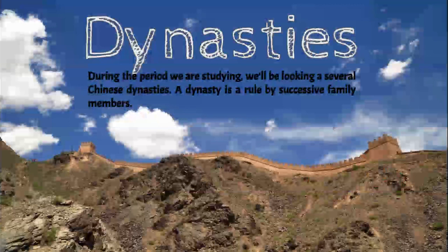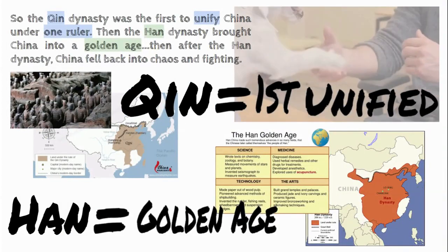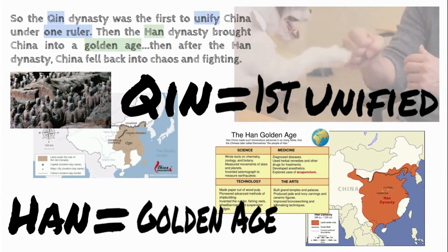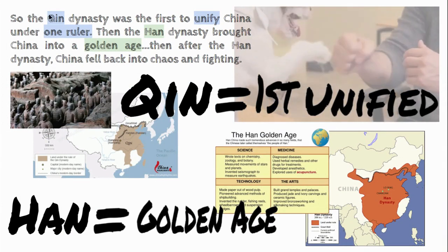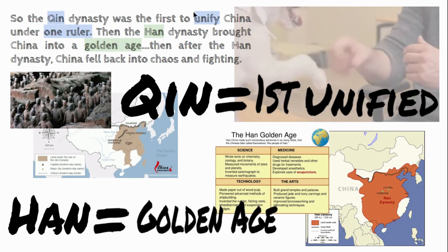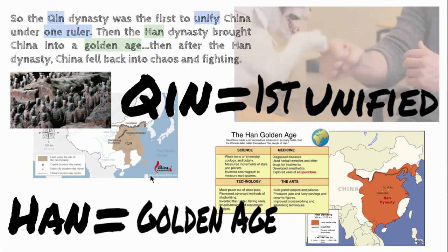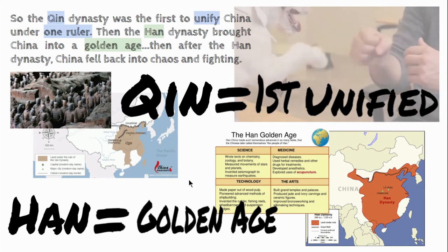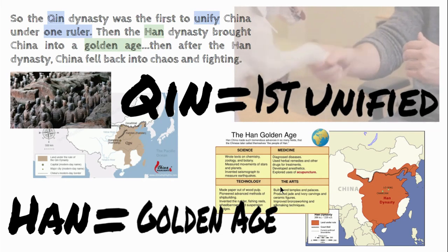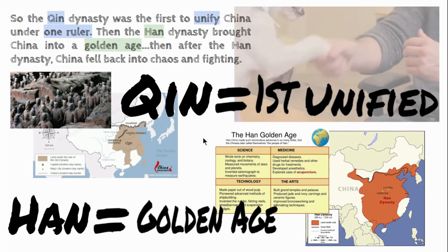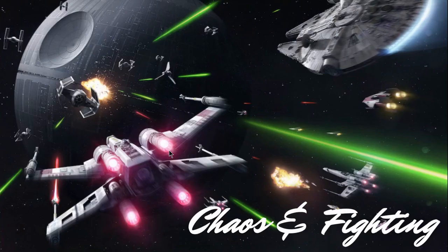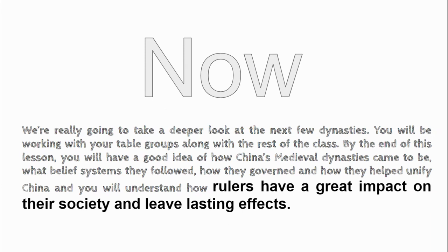Let's look at the early dynasties. The Qin dynasty was the first to unify China — you might have seen the terracotta warriors, which were constructed during that time. The Han dynasty is a big one you might have studied in sixth grade. They were around during a golden age in China where there was a lot of science, medicine, technology, and arts. After the Han dynasty there was chaos and disunification again.